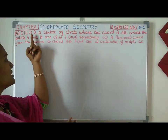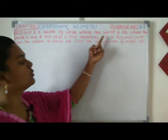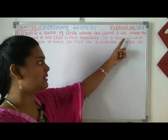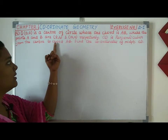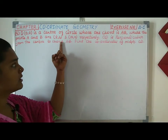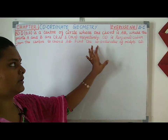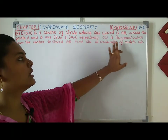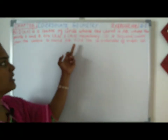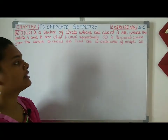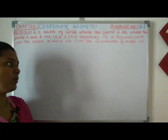O(0,0) is the center of the circle whose one chord is AB, where the points A and B are (8,6) and (10,0) respectively. OD is perpendicular from the center to chord AB. Find the coordinates of midpoint D.